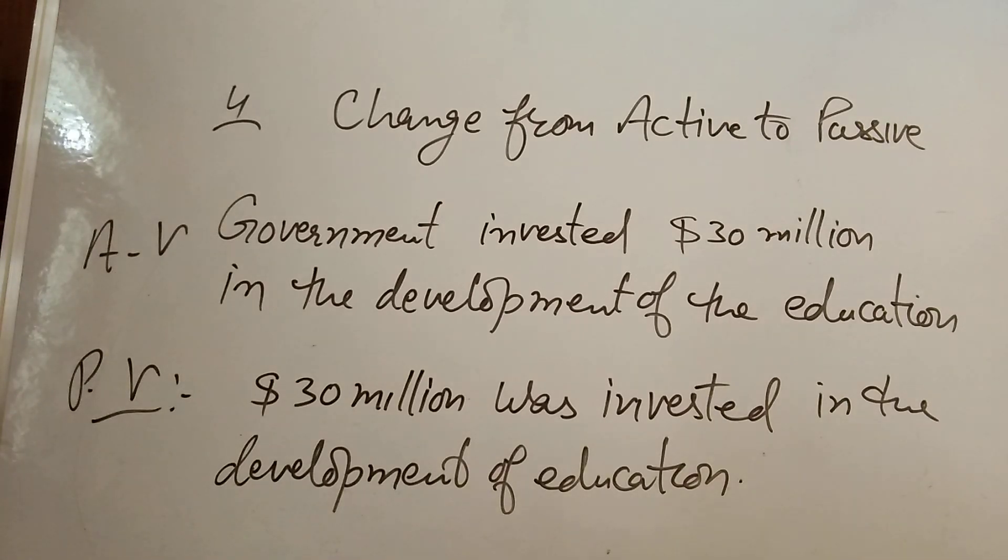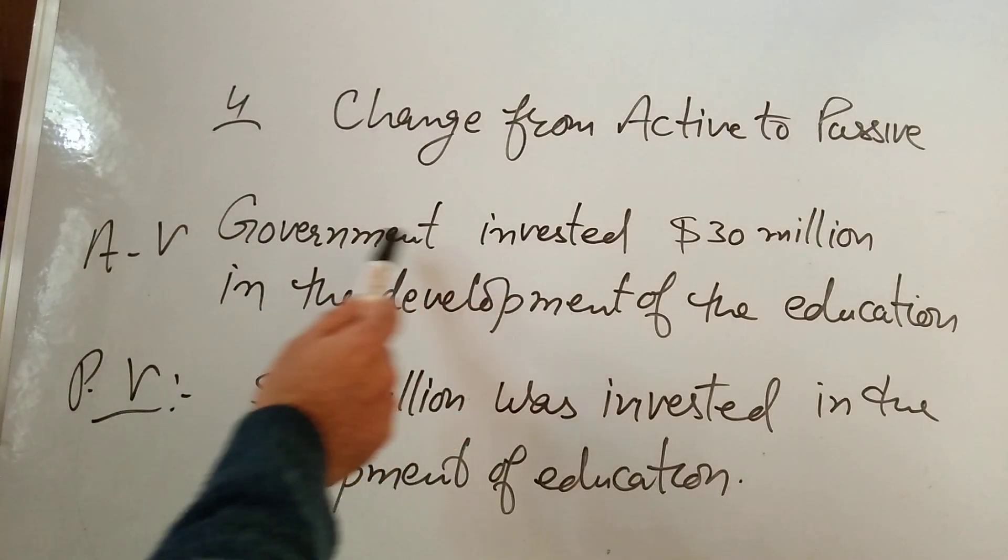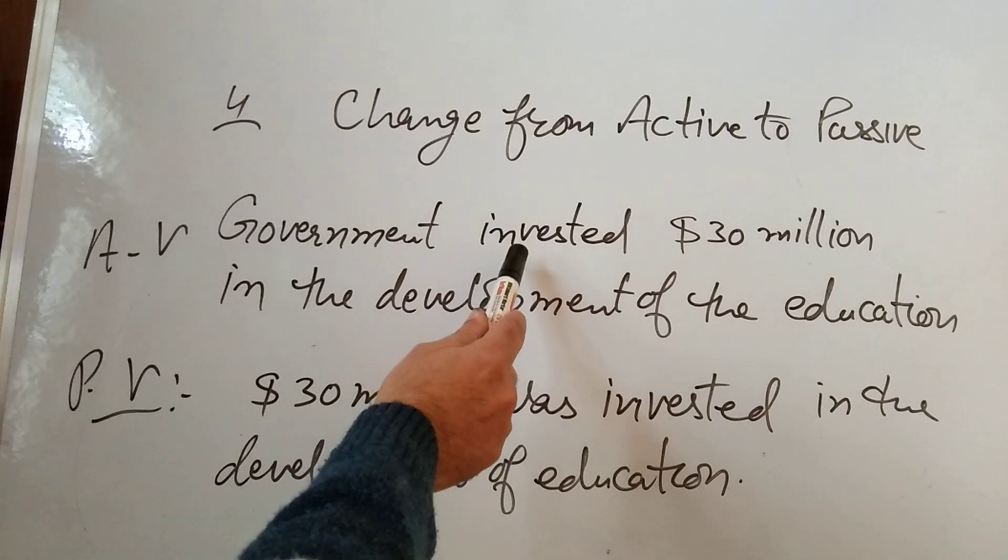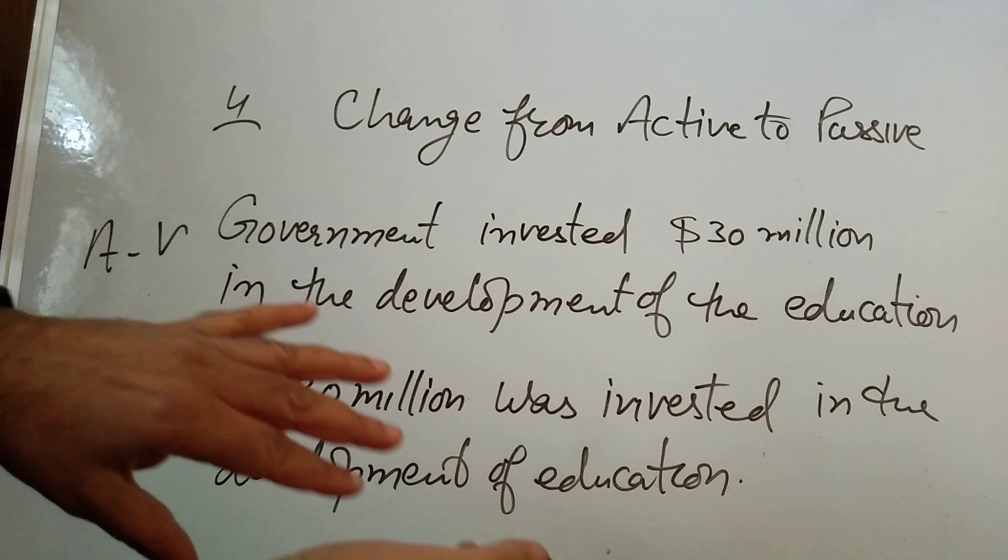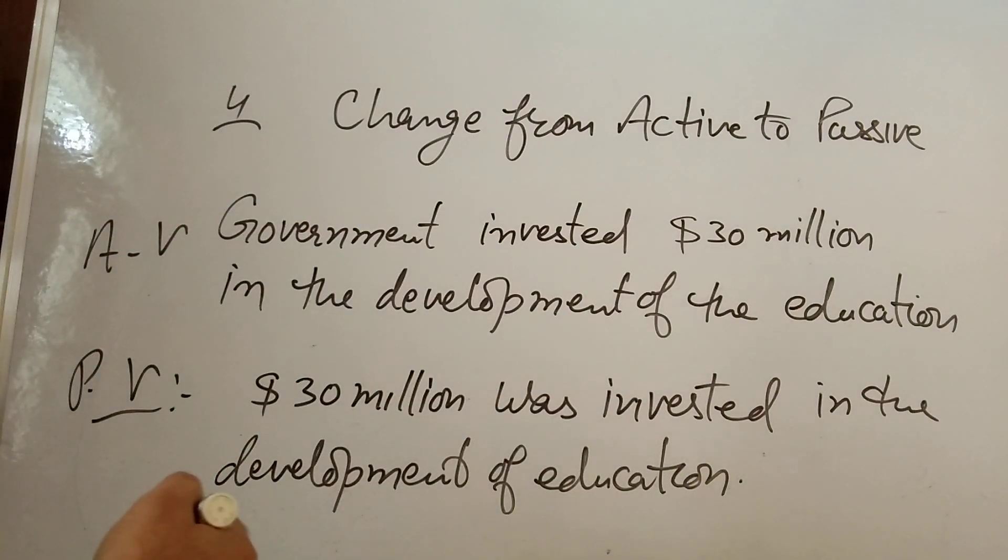Change from active to passive. This is very simple. You have to change subject into object or object into subject and introduce helping verb and then third form of verb. So, let's see one example. Government invested $30 million in the development of education. Government invested. Government is subject here. Invested verb. And $30 million object. So, object can be brought in front of the sentence, in the beginning of the sentence as a subject. $30 million was invested in the development of the education.